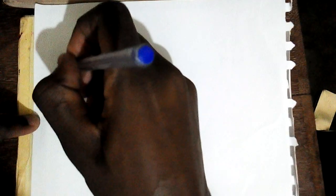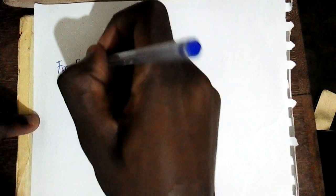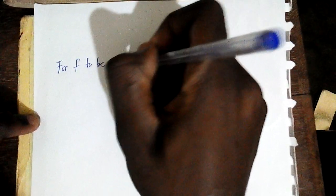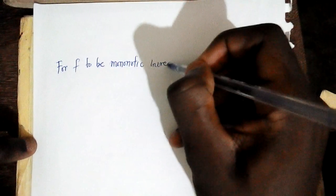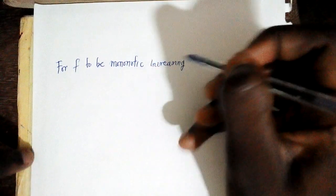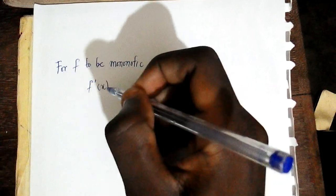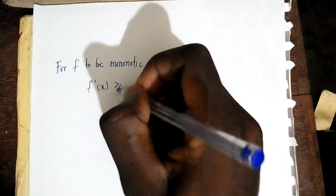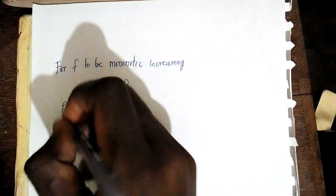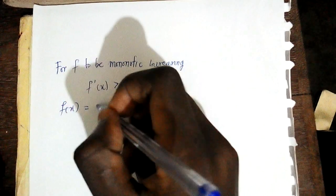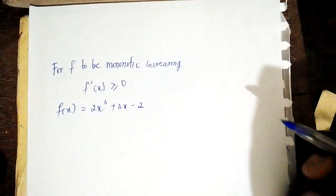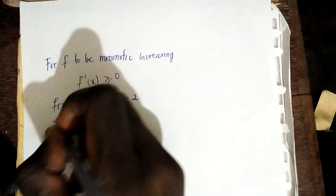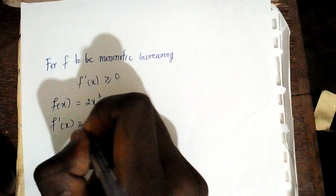We give the condition for a function to be monotonic increasing. For f to be monotonic increasing, the first derivative of f with respect to x should be greater than or equal to zero, that is f'(x) ≥ 0. Now our f(x) = 2x³ + 3x - 2, so I need to find the first derivative by differentiating the function one time with respect to x.